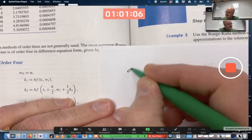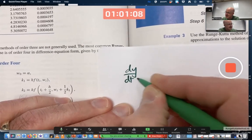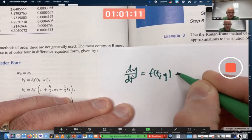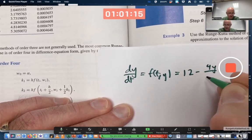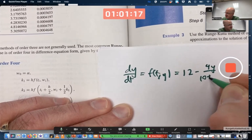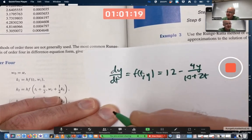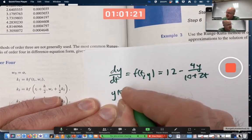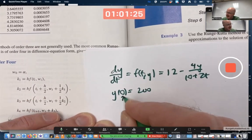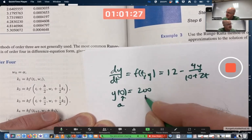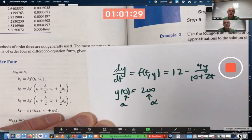Our IVP is the same IVP as before, dy/dt equals f of (t,y), which for our example is (12 minus 4y) over (10 plus 2t), initial condition y(0) equals 200. The starting value of t is 0, the alpha, the starting value of y is 200.